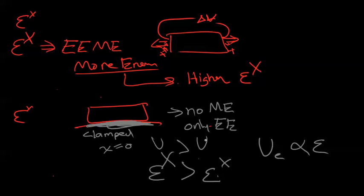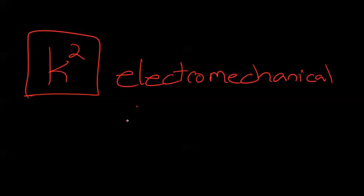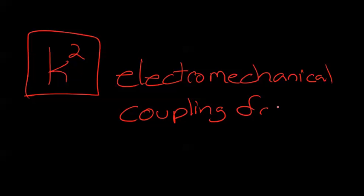This was the explanation of how mechanical boundary conditions affect permittivity and the energy stored. Now, as promised, we are finally capable of understanding the K² term, also known as the electromechanical coupling factor.